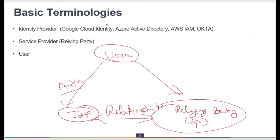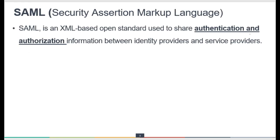Those familiar with cloud providers will recognize examples: in Google it is Google Cloud Identity, in Azure it is Azure Active Directory, in AWS it is AWS IAM, and there is also Okta.